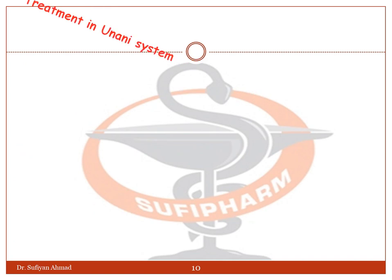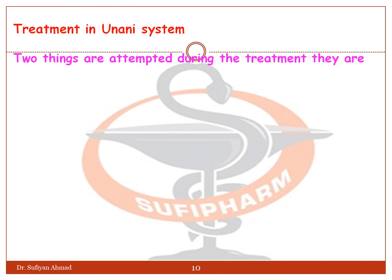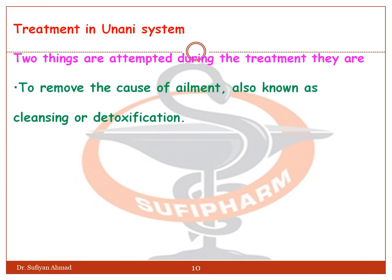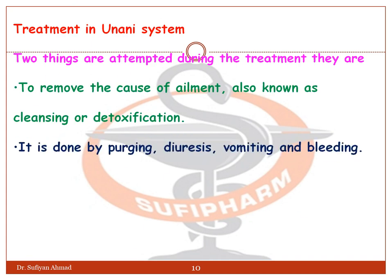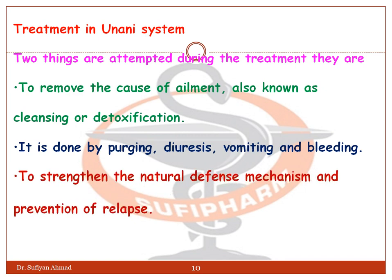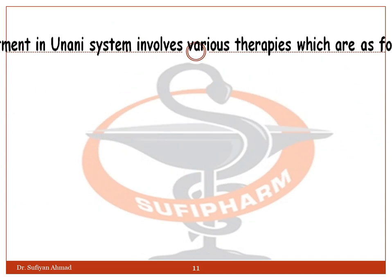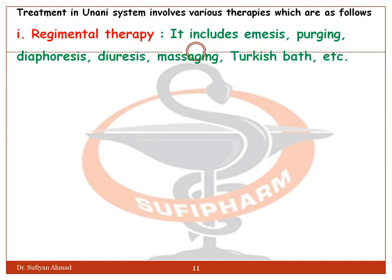The treatment of the Yunani System of Medicine involves two main goals: to remove the cause of ailment, also known as cleansing or detoxification, which is done by purging, diuresis, vomiting, and bleeding; and to strengthen the natural defense mechanism and prevention of relapse. The treatment involves various therapies.